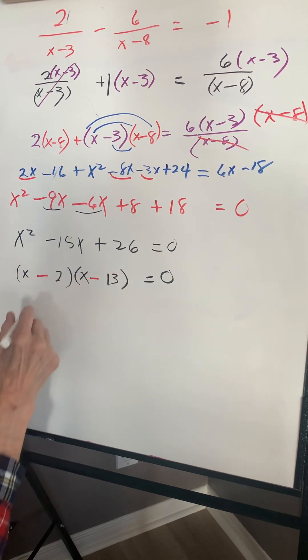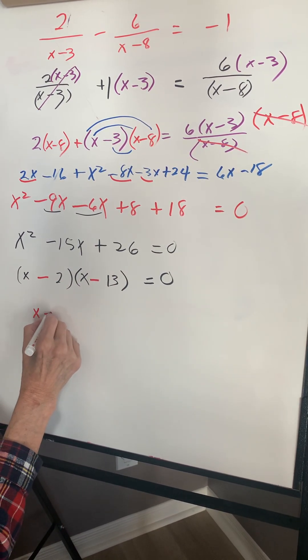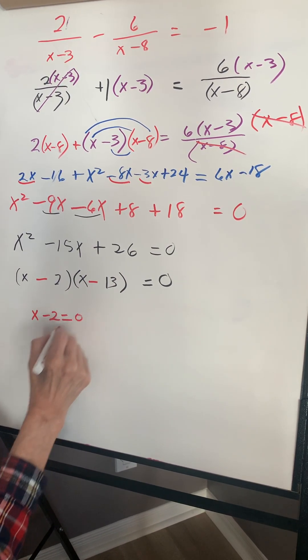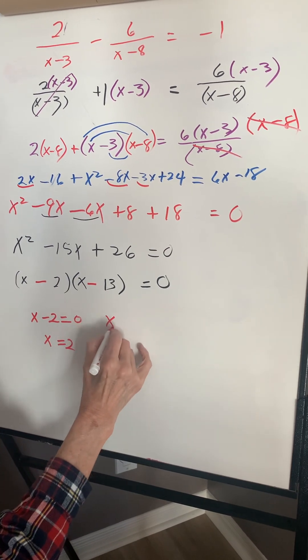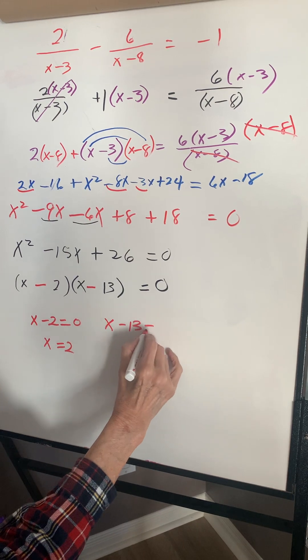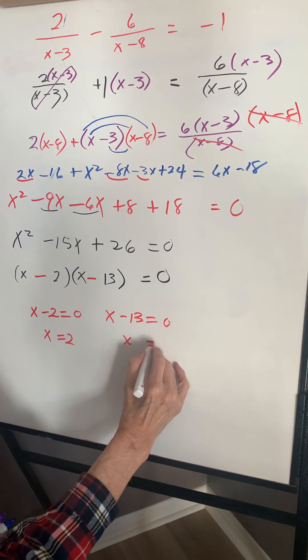So when x is 2, this goes to 0. So x is 2. And over here, when x is 13, that goes to 0.